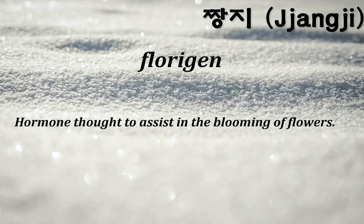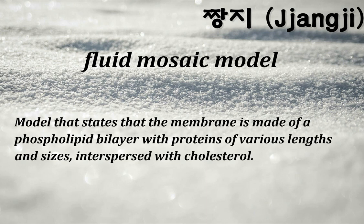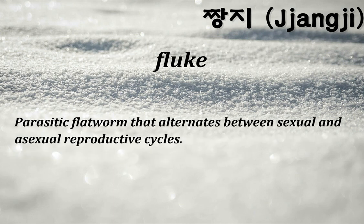Florigen: a hormone thought to assist in the blooming of flowers. Fluid mosaic model: states that the membrane is made of a phospholipid bilayer with proteins of various lengths and sizes interspersed with cholesterol. Fluke: a parasitic flatworm that alternates between sexual and asexual reproductive cycles.